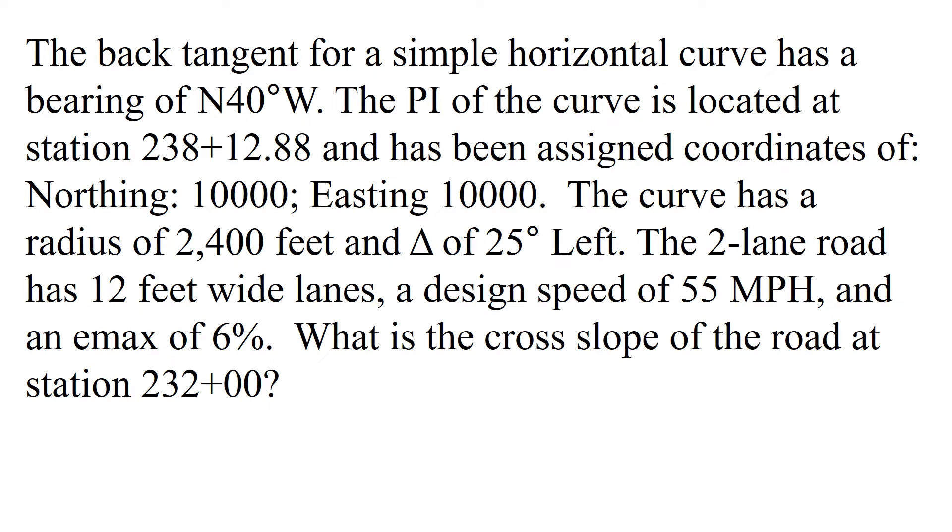We're told that a curve has a back tangent with a bearing of north 40 degrees west. The PI of the curve is located at station 238 plus 12.88 and has been assigned coordinates of northing 10,000, easting 10,000. The curve has a radius of 2,400 feet and a delta of 25 degrees to the left. The two lane road has 12 foot wide lanes, a design speed of 55 miles per hour, and an Emax of 6%. What is the cross slope of the road at station 232?